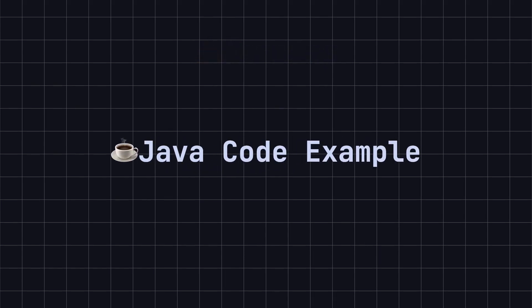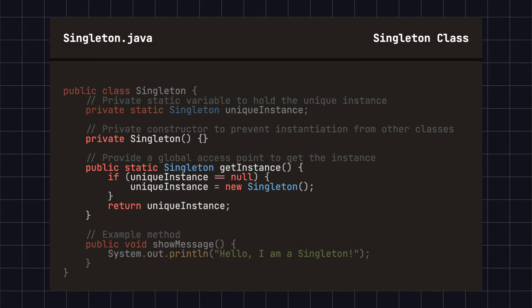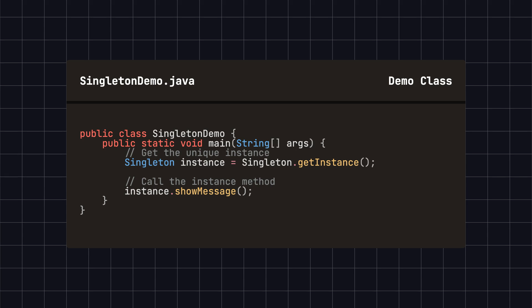To better understand the Singleton design pattern, let's look at an example implemented in Java. First, we define a Singleton class whose constructor is private and provides a static method to get its only instance. Next, we can get the unique instance of the Singleton class through the GetInstance method. In this example, we first obtain the unique instance of the Singleton class by calling the GetInstance method, then call its ShowMessage method to display a message.